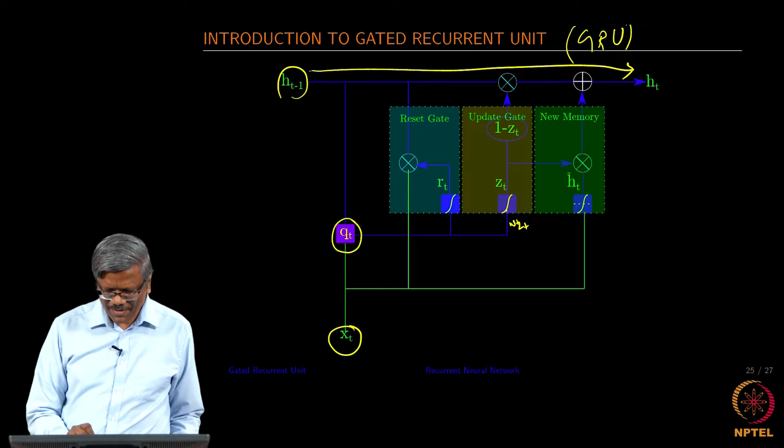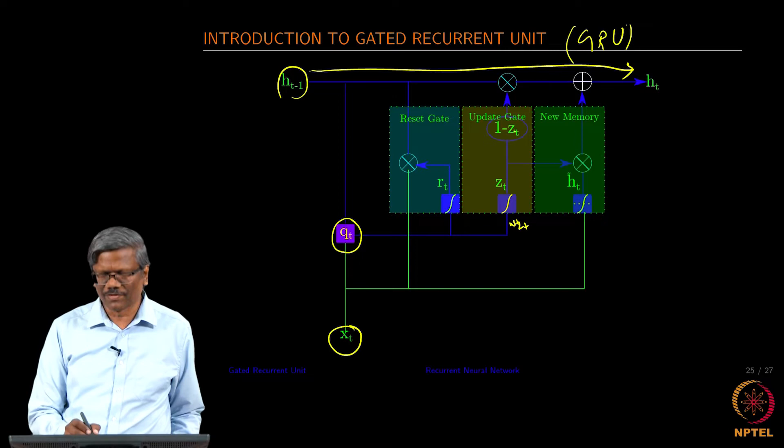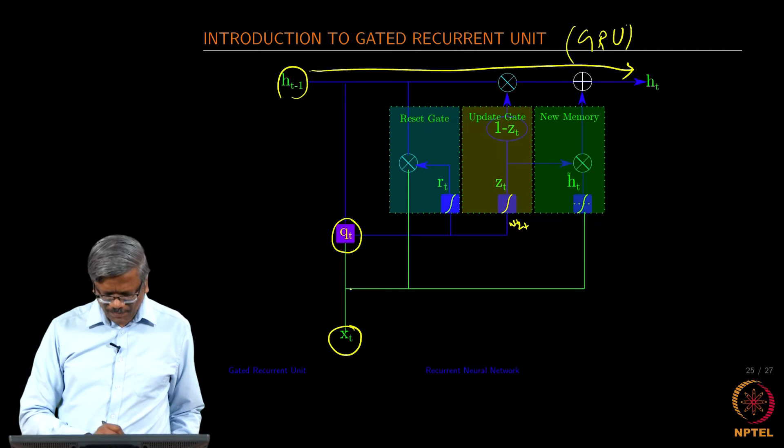It is a sigmoid function, and then what it does here is it takes the value that is computed here using the sigmoid and it is 1 minus of that. We will come to that later.